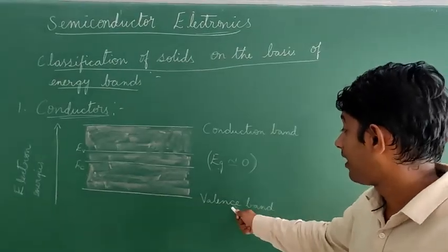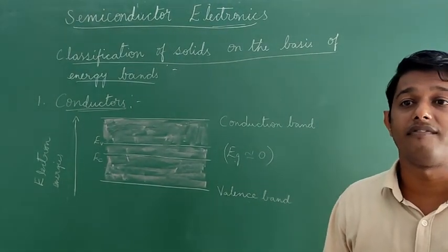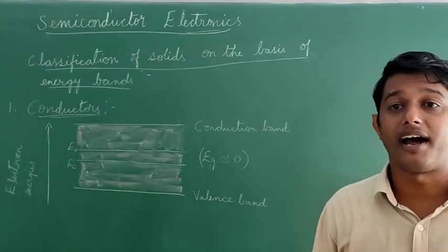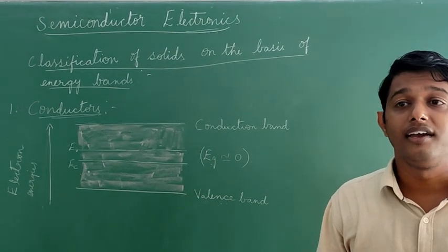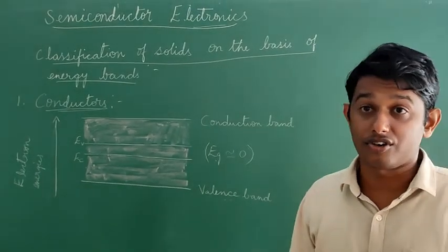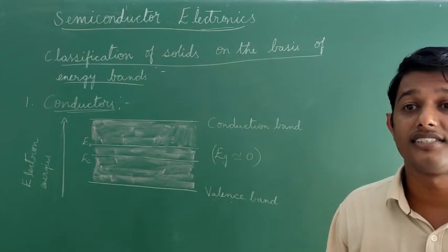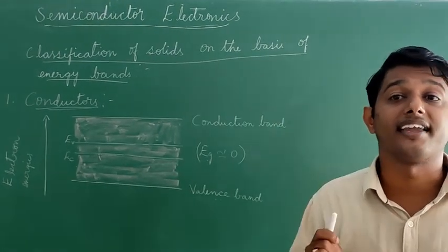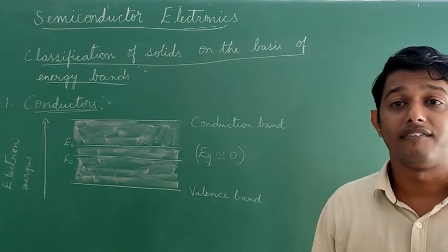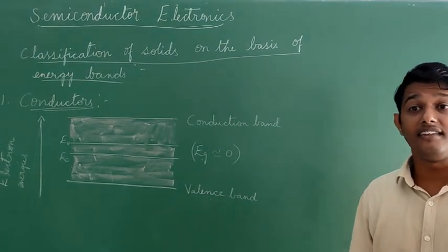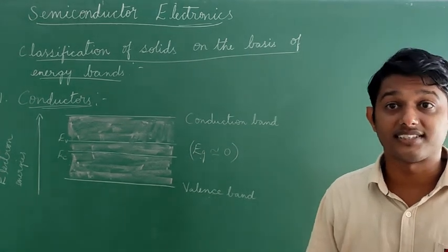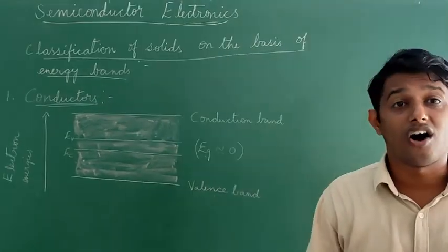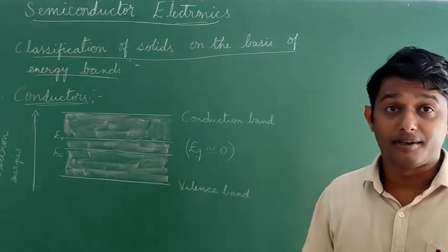As you can clearly see, the conduction band and valence band are both overlapped. Therefore, the conduction band is completely filled by free electrons. As a result, resistance in a conductor is low and conductivity is high. The resistance and resistivity increase with rise in temperature. Examples of conductors are all metals like iron, copper, aluminium, gold, etc.